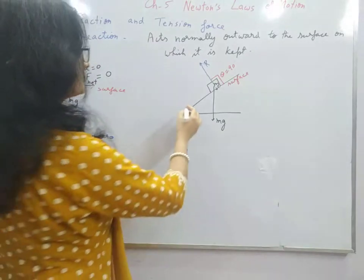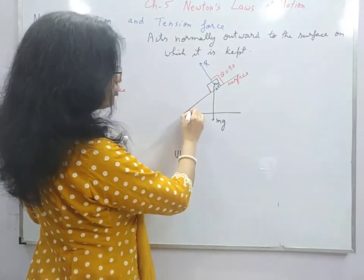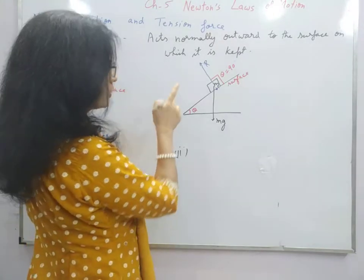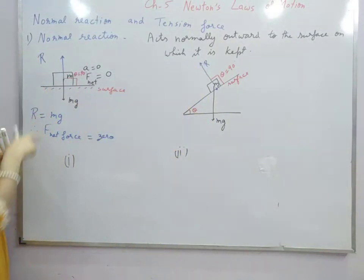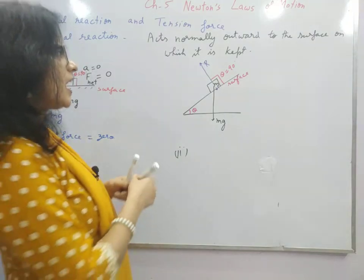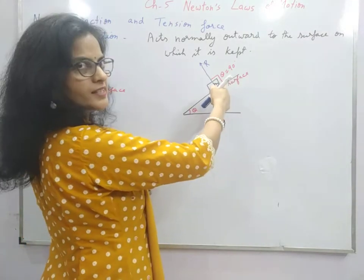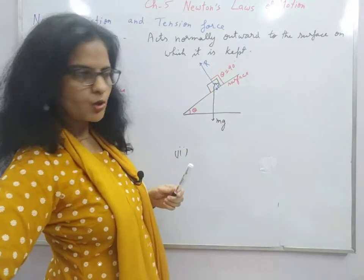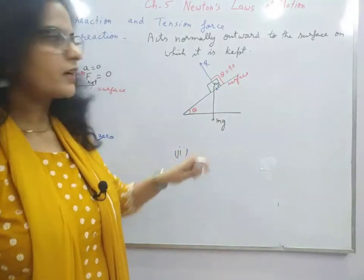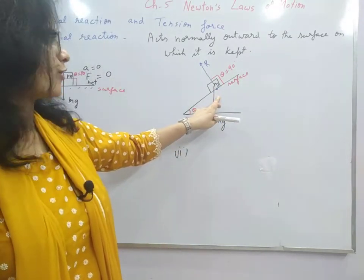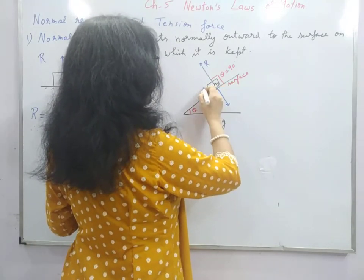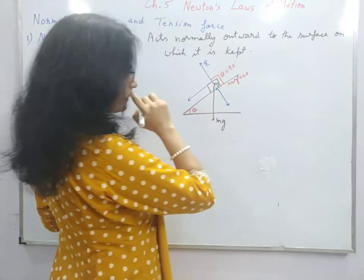So now in this case you will use the concept that normal reaction is not equal to Mg on the inclined surface, whereas on the horizontal surface normal reaction is equal to Mg. Why so? Because our surface under consideration is the inclined one, so this is normally outward here. Now we will have to find the components of this Mg weight along this direction and perpendicular to this direction.